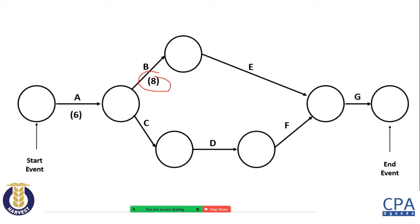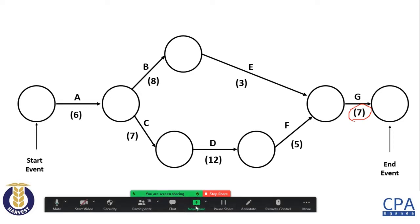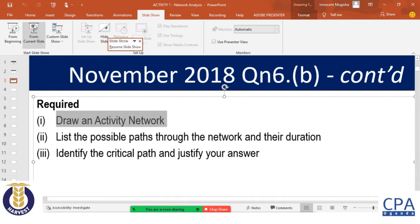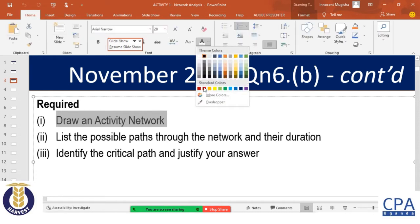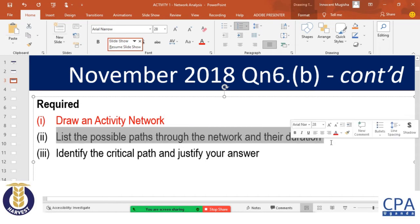I insert the duration times into the network: A is 6 days, B is 8 days, C is 7 days, D is 12 days, E is 3 days, F is 5 days, and G is 7 days. The examiner asked us to draw the network diagram — which we have done — and then to list all the possible paths through the network and their durations.